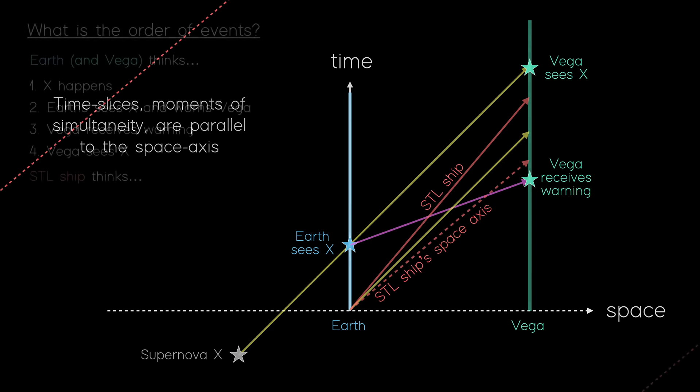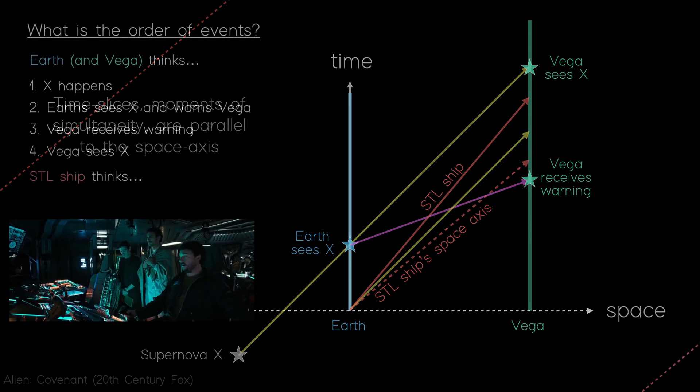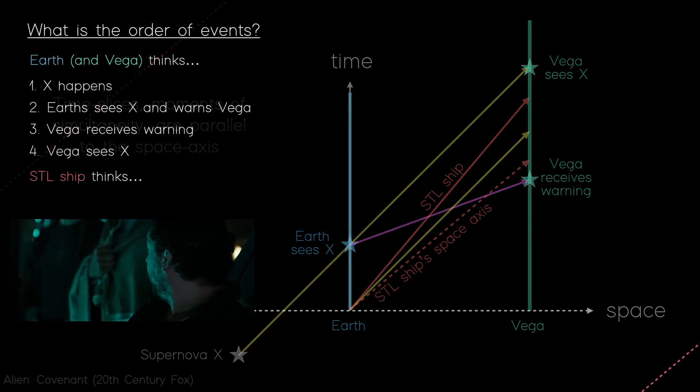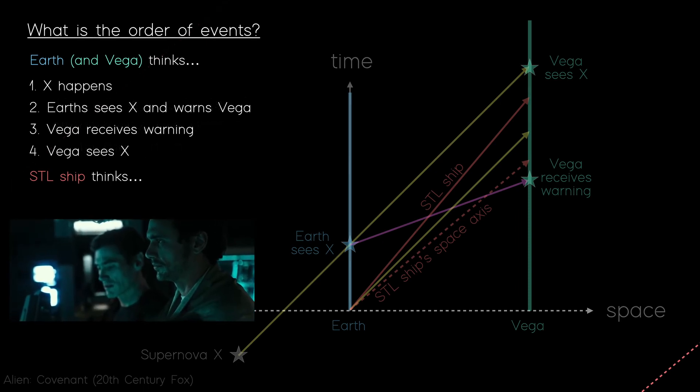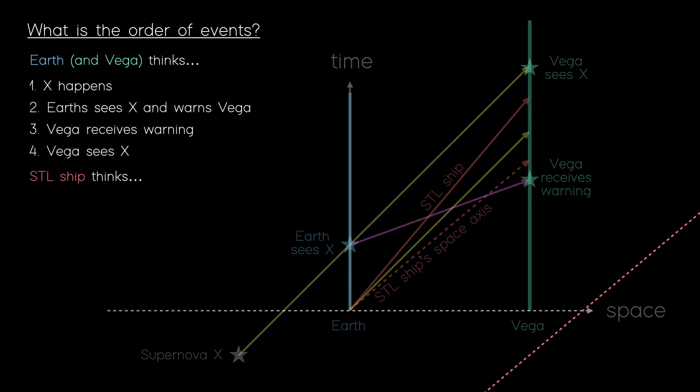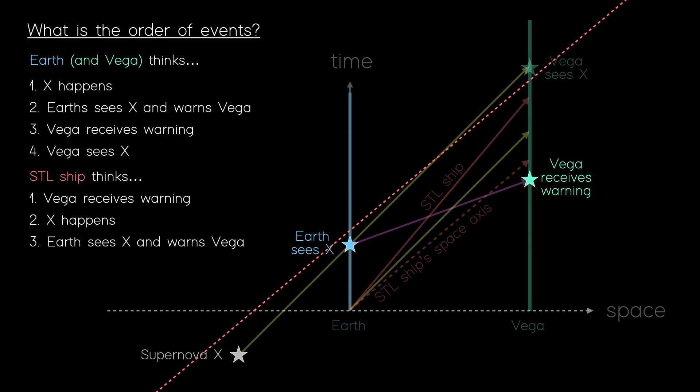So coming back to the order of events, look, we already know what the Earthlings and the Vegans think happen, but what did the crew of the ship think? Using our sliding time slice, we can see that the first event in time, as perceived by the ship's crew, is that Vega receives the warning message from Earth about X. Going further, the second event is that Supernova X happens. Third, we see that Earth sees X. And fourth, and final, the Vegans see X.